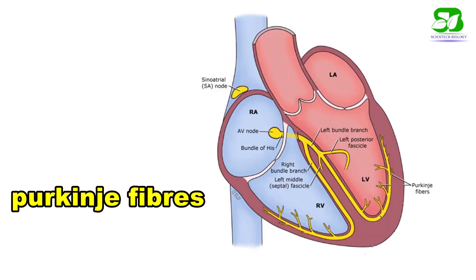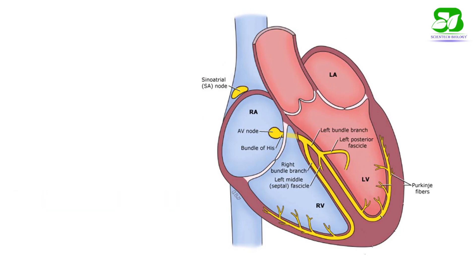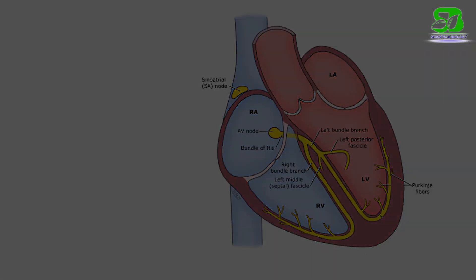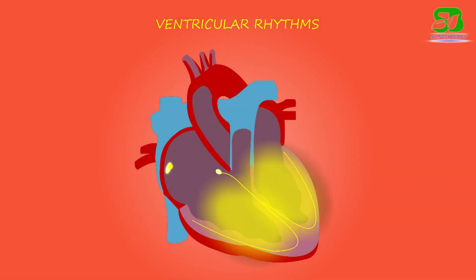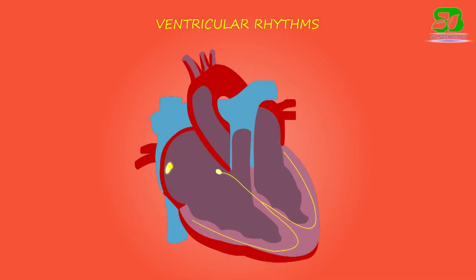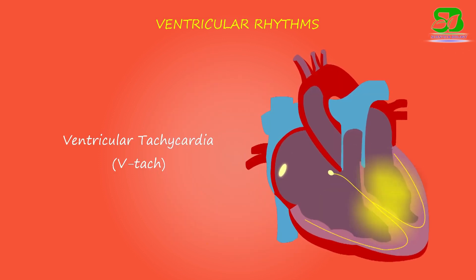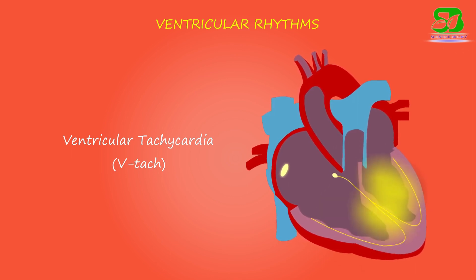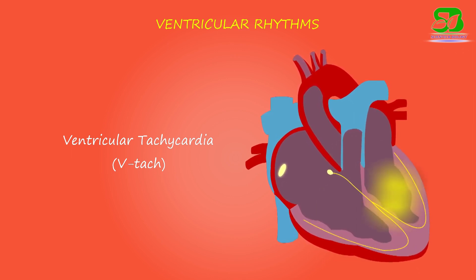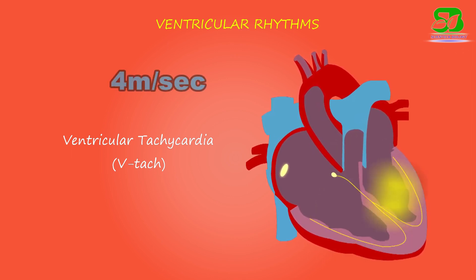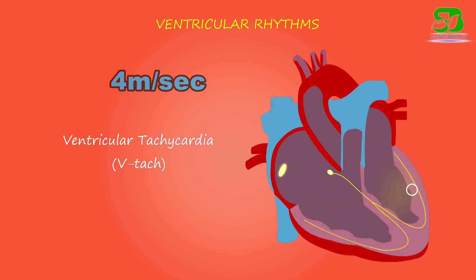Purkinje fibers are very fine fibers which arise from the branches of the bundle of His. They ultimately spread into the papillary muscles and lateral wall of the ventricles. Their main function is to conduct impulses quickly to every part of the ventricular muscle fibers. These fibers can also initiate impulses in cases of atrioventricular dissociation. The speed of conduction of impulse is highest in Purkinje fibers, at about 4 meters per second.